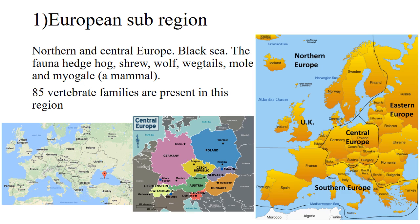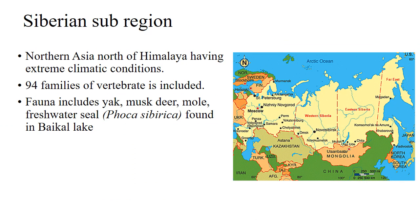85 vertebrate families are present in the European subregion. The fauna includes hedgehog, shrew, wolf, bats, moles, and myogales. The Siberian subregion consists of northern Asia, north of the Himalayas, and has extreme climatic conditions. 94 families of vertebrates are present. Fauna in this region includes yak, musk deer, mole, and freshwater seals.